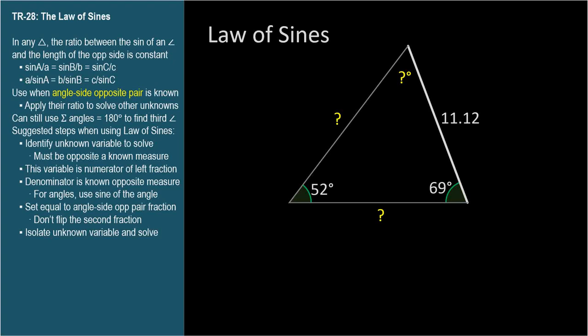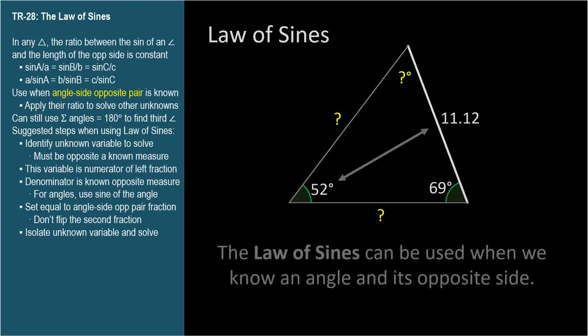So we can use this to solve triangles. In this case, we know an angle and its opposite side. That's the key to being able to use the law of sines. We must know an angle-side opposite pair. In fact, when you see a nail, you hit it with a hammer. And when you see an angle-side opposite pair, you hit it with the law of sines.